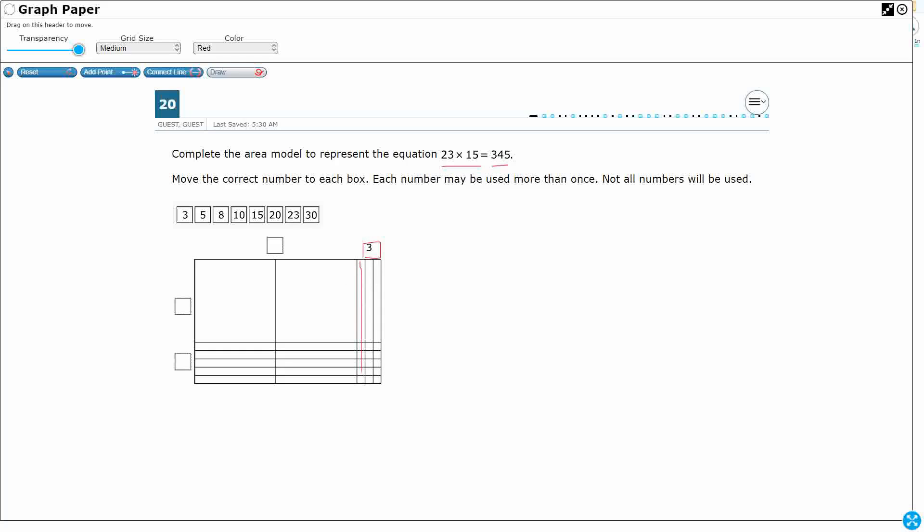If we take a look at what they've got here, they've got three columns right here. And each of these columns are supposed to represent a one because they're super skinny. And so that is going to kind of help anchor us here because we've got this 23 × 15 equals 345. We could do the math, but they went ahead and gave this to us. So how do we represent this with an area model?